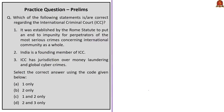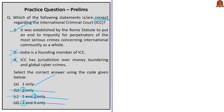Question two on the International Criminal Court: Statement one — it was established by the Rome Statute to put an end to impunity for perpetrators of the most serious crimes; this is correct. Statement two — India is a founding member of the ICC; this is incorrect, as India is not a signatory to the Rome Statute. Statement three — ICC has jurisdiction over money laundering and global cyber crimes; this is incorrect, as ICC has jurisdiction only over genocide, crimes against humanity, war crimes, and crime of aggression. The correct answer is option A — statement one only.